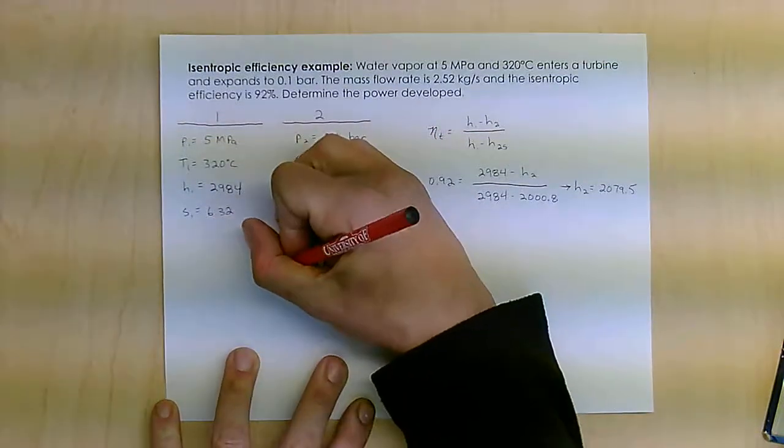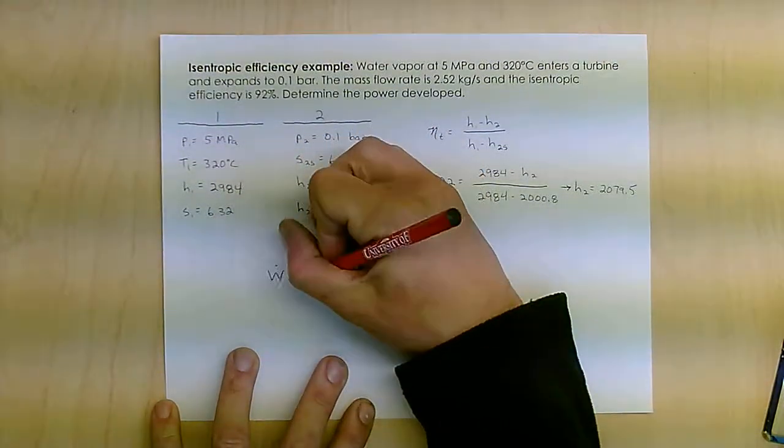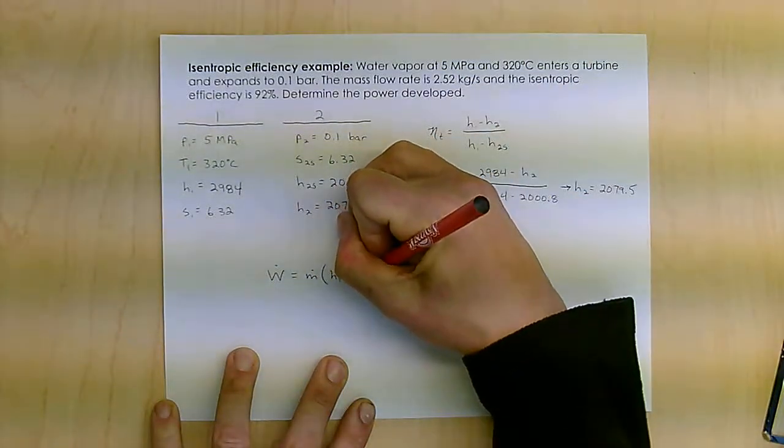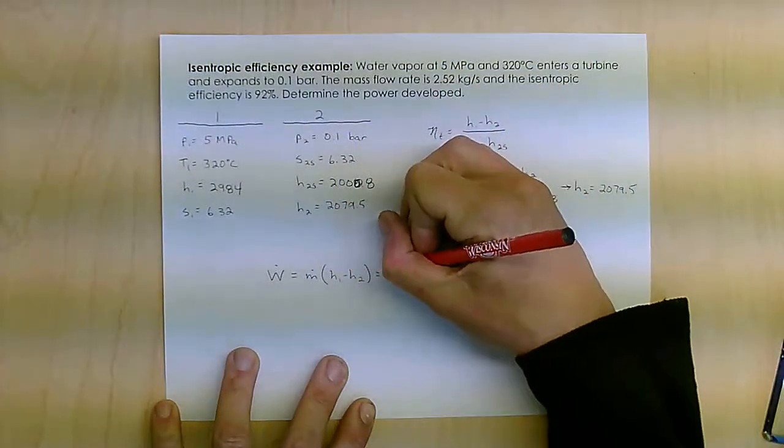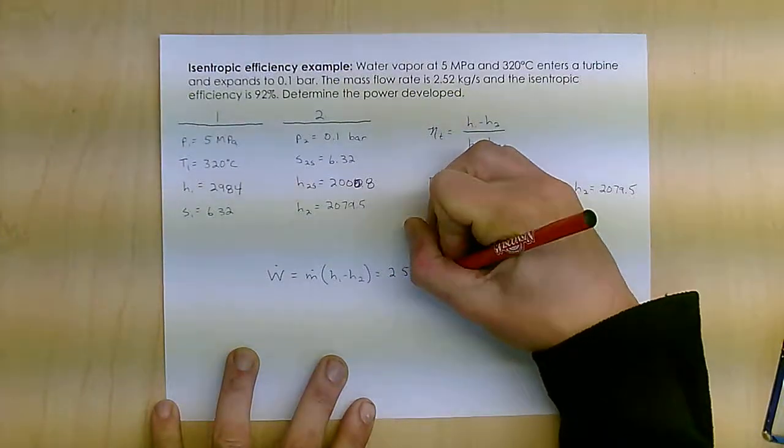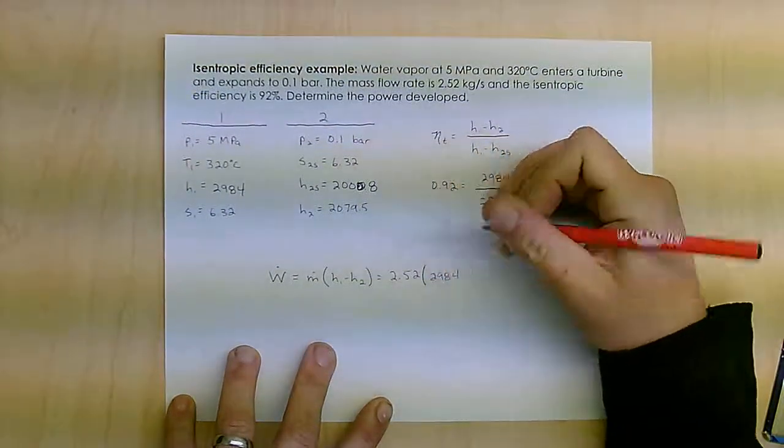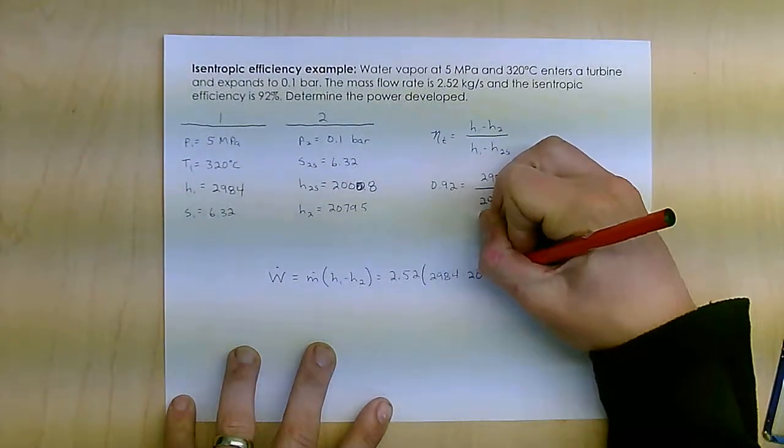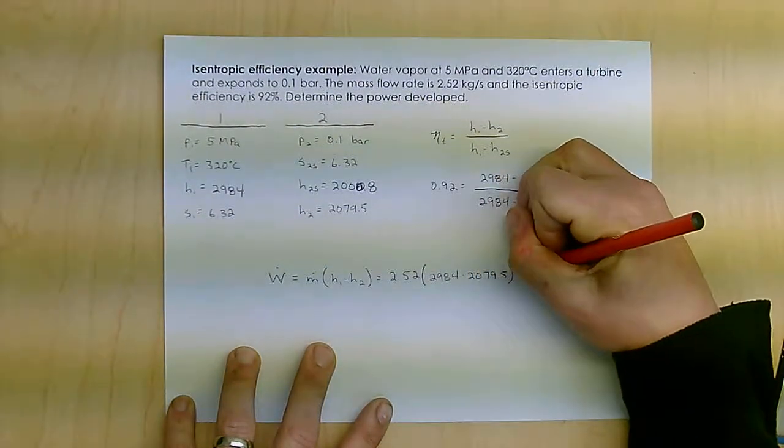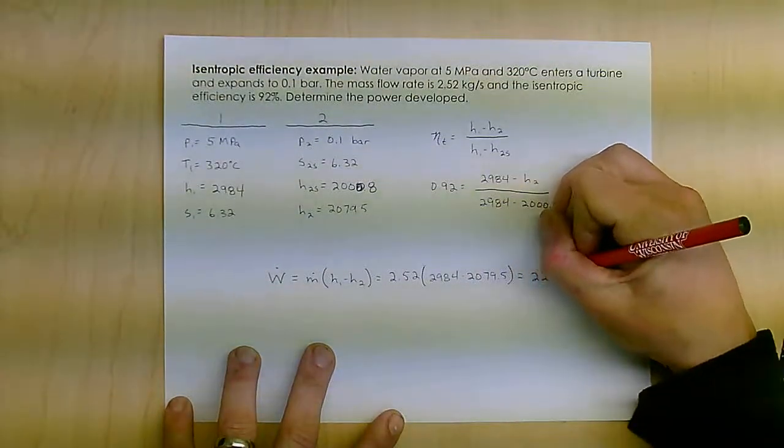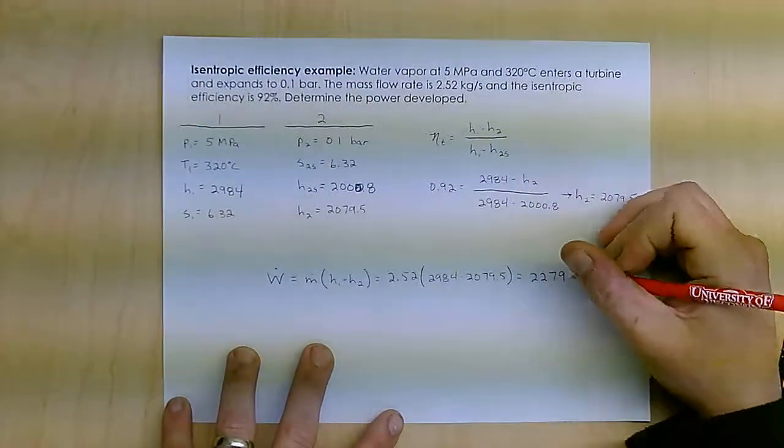Now, very simply, I can find the work of this guy just as the mass flow rate of H1 minus H2, which is going to be 2.52 times 2984 minus 2079.5, which gives me the work of that to be 2279 kilowatt.